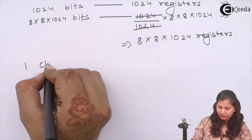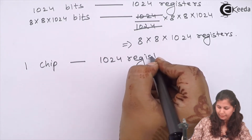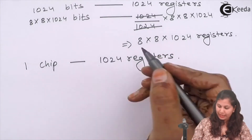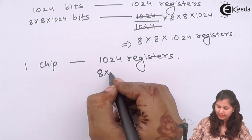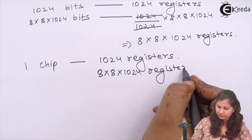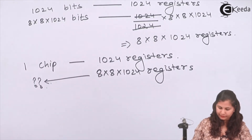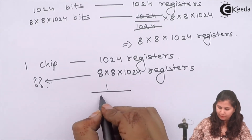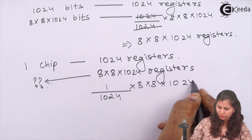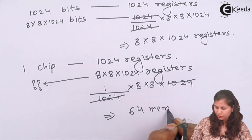One chip is having a total of 1024 registers. We require 8 x 8 x 1024 registers, so how many chips do we need? Dividing: 1 chip per 1024 registers into 8 x 8 x 1024 registers gives us 64 memory chips are required.